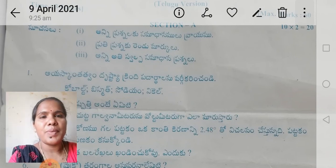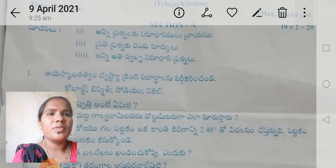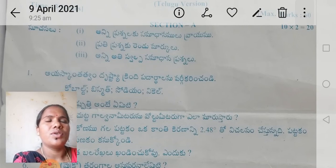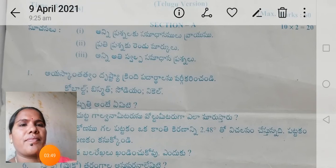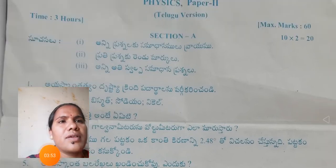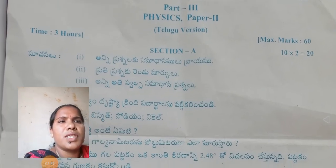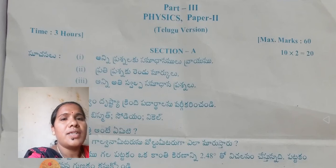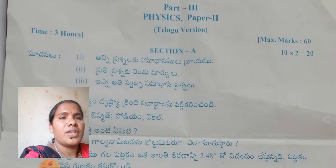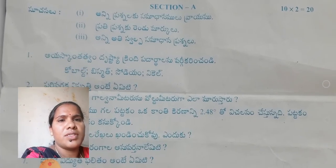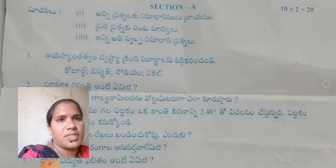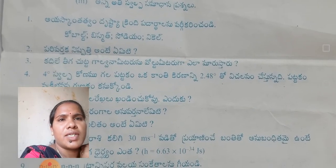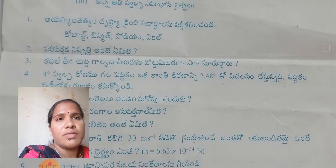This is the question pattern for regular BiPC and MPC students. For Telugu medium students, Physics Paper 2, Part 3, maximum marks 60. Section A has 2-mark very short answer questions — you have to attempt all the questions, there is no choice. Each question carries 2 marks.